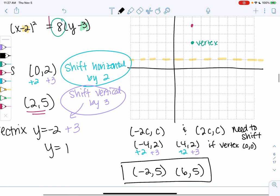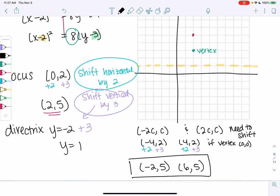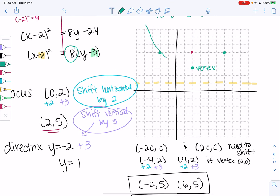So we'll plot those. Those should make a nice focal chord. Those should be in the same line as the focus. So (6,5). We go over 6, up 5. (-2,5). We go over negative 2, up to 5. We should have that nice focal chord if everything's correct. Then we can connect them to make a parabola. So again, I prefer shifting rather than learning all these crazy new formulas. I hope this helps.